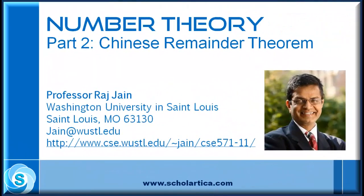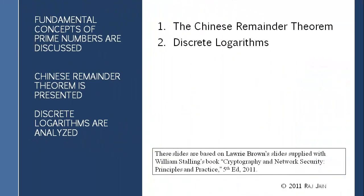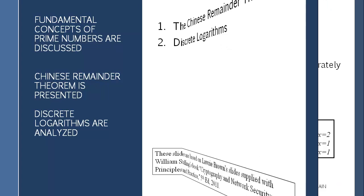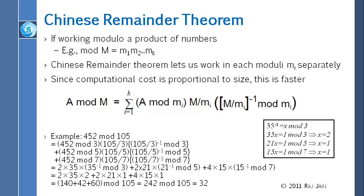One very important theorem which is coming up is the Chinese Remainder Theorem, and this one you have to practice a lot. Chinese Remainder Theorem is used in public key cryptography. All it does is that if you have a large number and you want to do a mod of a large number, if the large number can be factored, then you can do small mods.